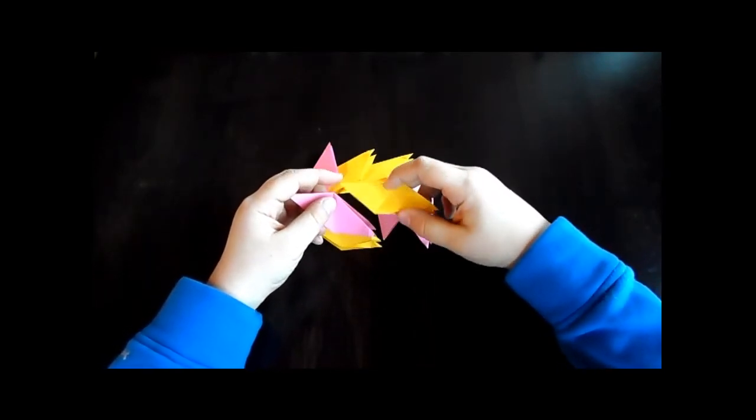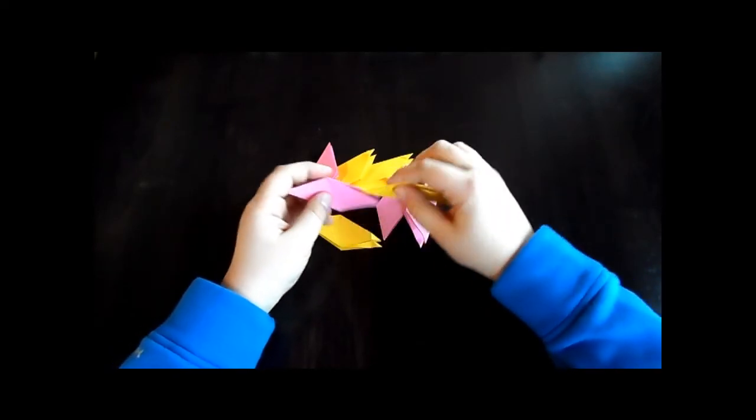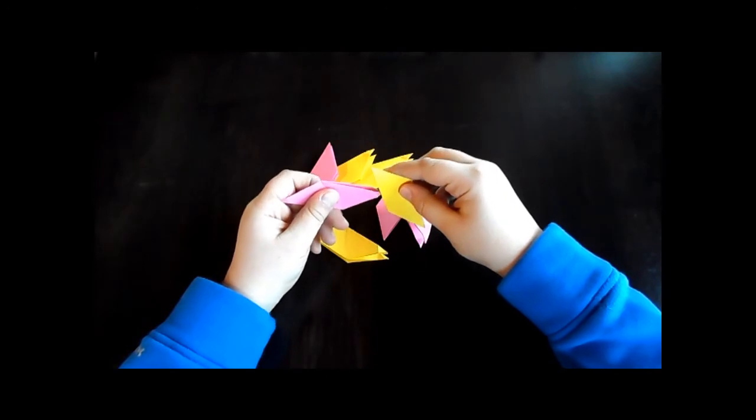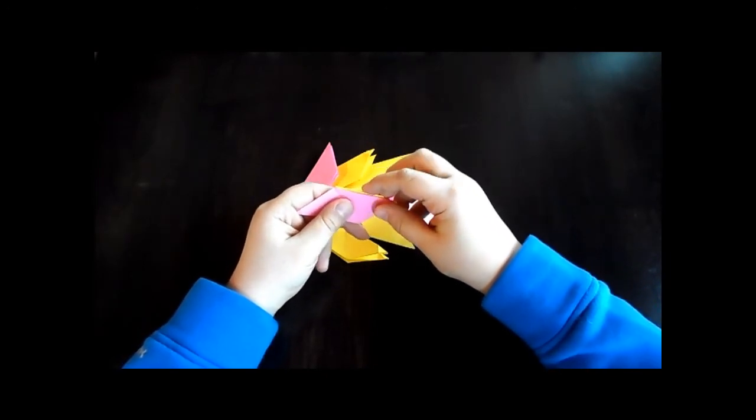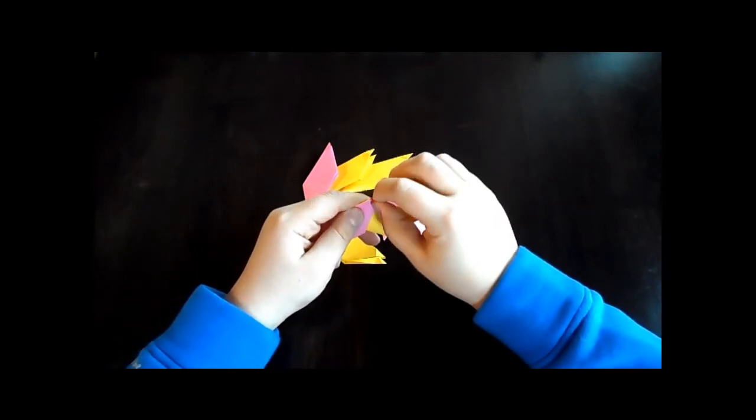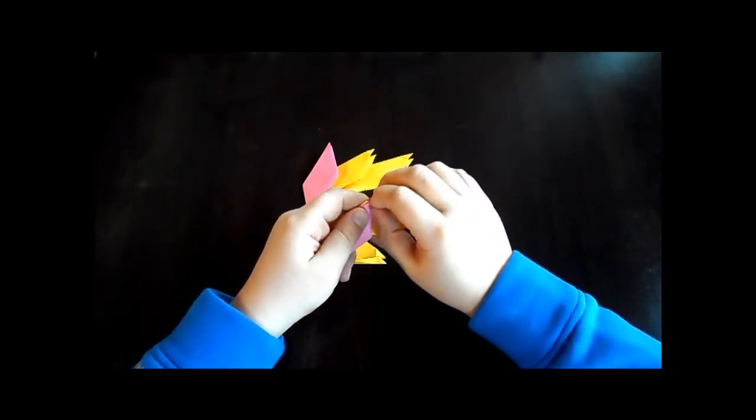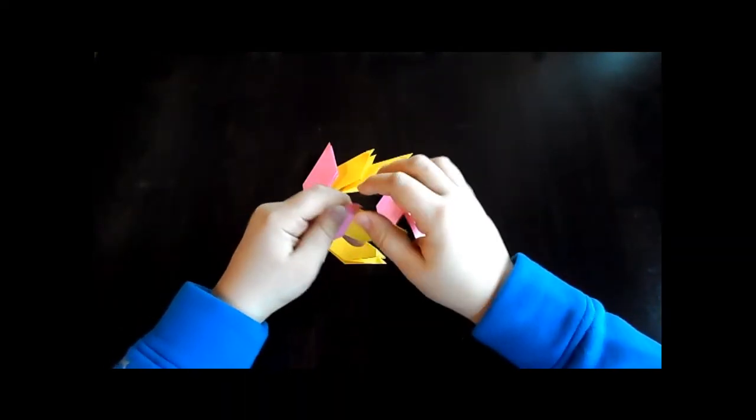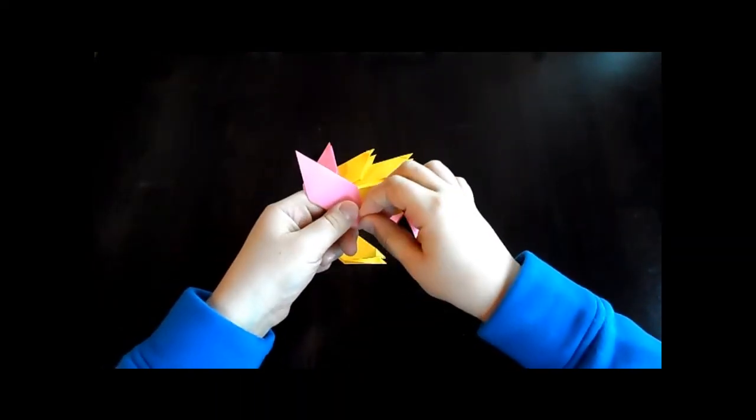What you do is you both hold them like this so that the flaps are on the right. Then you turn one like this and you're gonna put these in. That's half of it already.